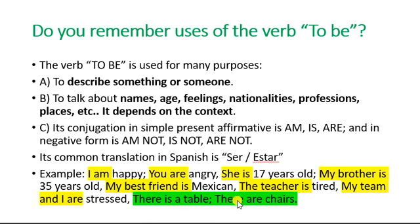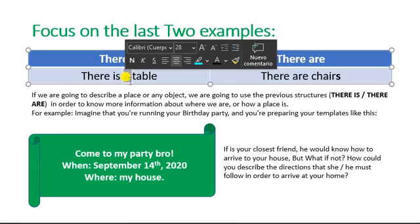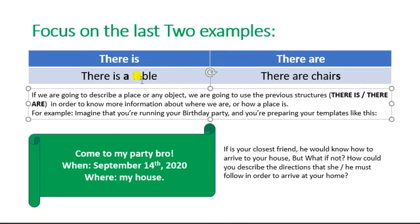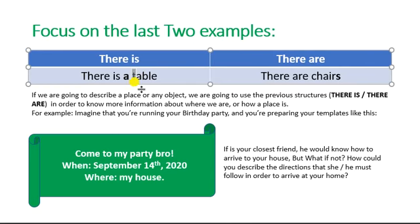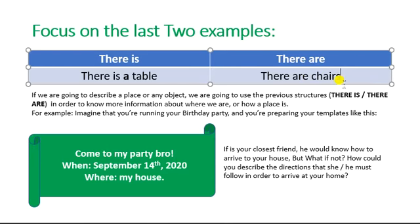Nos vamos a enfocar en estas dos últimas estructuras: 'hay una mesa' y 'hay sillas.' Lo más importante del 'there is' es que siempre va a llevar el artículo 'a' o 'an,' dependiendo de la primera letra del sustantivo. 'A' es solamente para sustantivos cuya primera letra comience con consonante, y 'an' para las vocales. En el caso del 'there are,' no va a haber ningún artículo 'a' o 'an,' sino que debemos agregarle únicamente el sufijo de plural 's.'